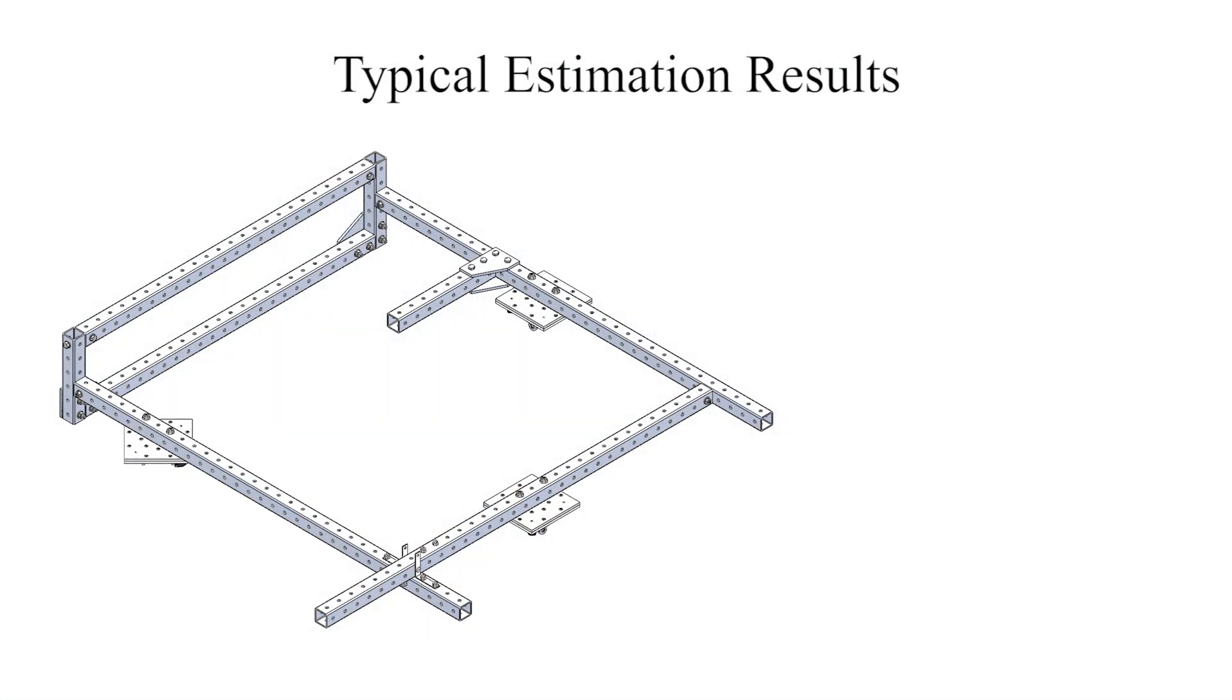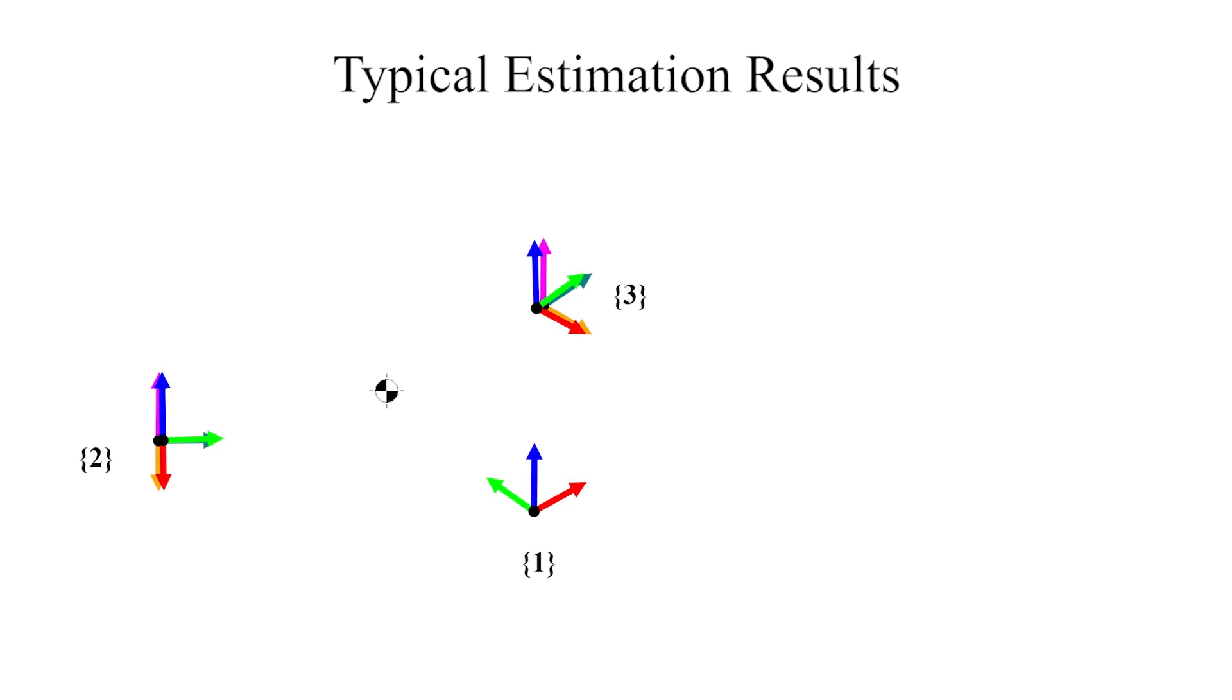A typical experimental result is shown here. The figure shows the actual grasp frames and center of mass for one of the payloads. The estimated grasp frames align closely, and across all our experiments, mean grasp frame position and orientation errors were less than 6% and 4 degrees respectively.